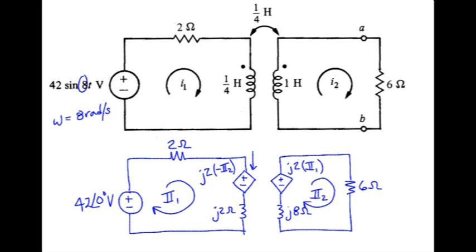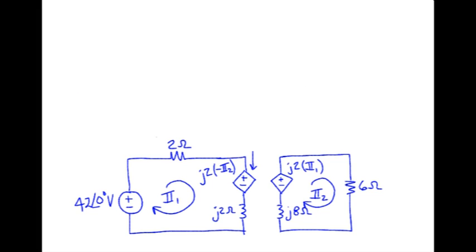So at this time I'm going to erase the original time domain circuit so I have a place to write some equations. For mesh 1 starting in the lower left corner we have 42 at angle 0 volts plus 2 times I1 plus, I just write down whatever I see for that voltage source, plus j2 times I1 equals 0.